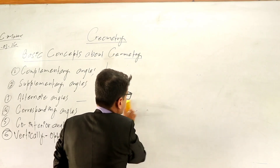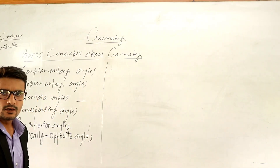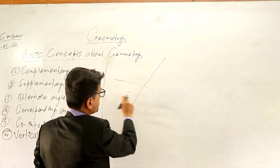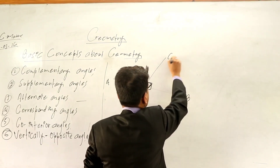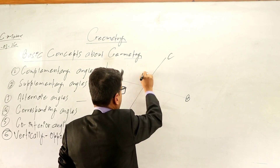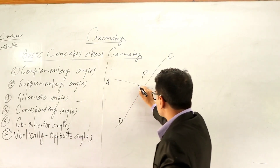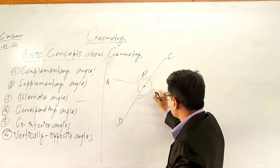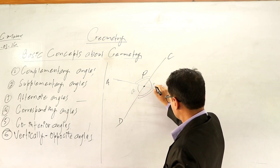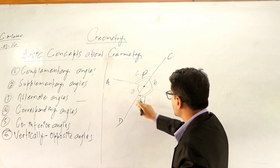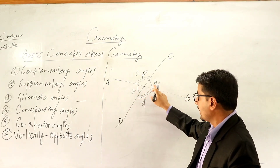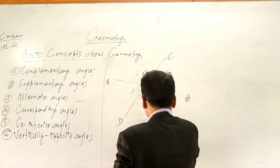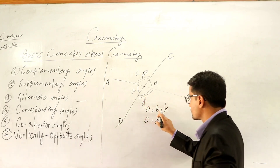The last one is vertically opposite angles. If any two straight lines intersect — suppose this is A, B, C, D intersecting at the common point P — then this angle A and angle B, and angle C and angle D, are vertically opposite angles. Vertically opposite angles are always equal: A equals B and C equals D.